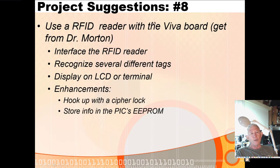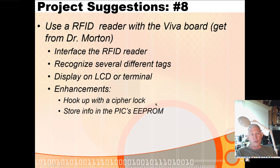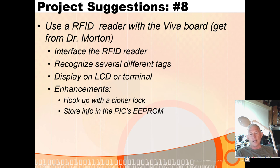You can use an RFID reader with the Viva board — I've got those along with a bunch of little tags it can read. You can display the tag number on an LCD or terminal program. Enhancements: hook it up with a cipher lock so the RFID reader reads a correct tag and opens the lock. You can also store tag data in the on-chip EEPROM and keep track of how many times each of four or five tags has been seen — that data stays even when you turn the Viva board off.